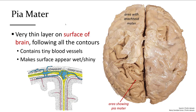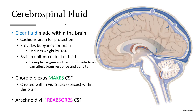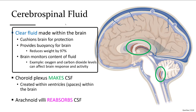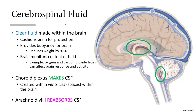The pia mater is directly touching the brain, located under the arachnoid mater. Cerebrospinal fluid is a clear fluid created within the spaces inside the brain by the choroid plexus. It makes the brain essentially float inside the skull, as the brain is made mostly of fat, which floats in water, reducing the weight of the brain by 97%. Otherwise the lower part would be crushed under its own weight.